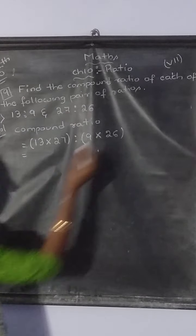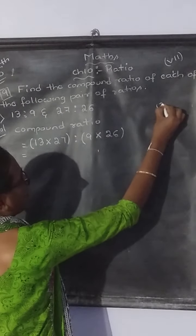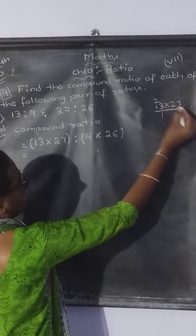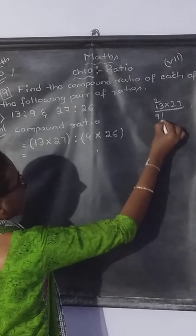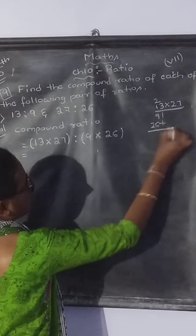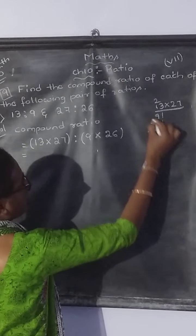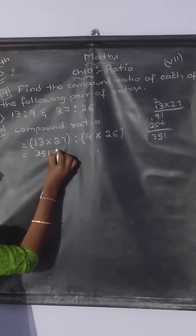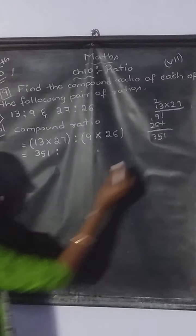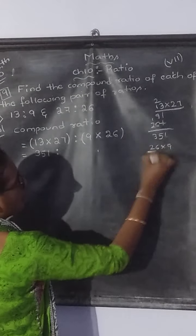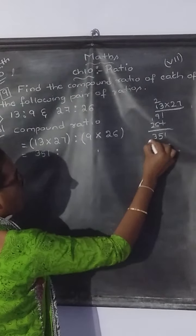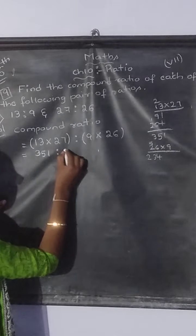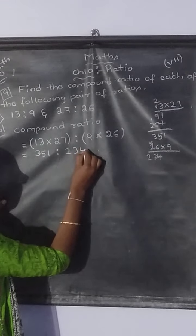Now let us multiply these 2. In the side work you do the multiplication. 13 into 27: 7 times 3 is 21, 1, 2 carry. 7 times 1 is 7, 8, 9. Plus 2 times 3 is 6, 2 times 1 is 2. 9 plus 6 is 15, 5, 1 carry. 2 plus 1 is 3. So 351 is to 9 into 26, which is nothing but 26 into 9. 6 times 9 is 54, 4, 5 carry. 9 times 2 is 18. What is 18 plus 5 children? 23. So 234.